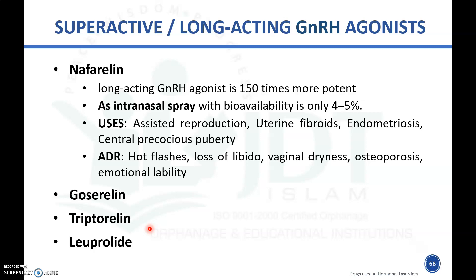Super-active or long-acting gonadotropin releasing hormone agonists include nafarelin, which is 150 times more potent than gonadorelin. It is used as an intranasal spray with a bioavailability of only 4 to 5 percent. It is mainly used for in vitro fertilization, assisted reproduction, uterine fibroids, endometriosis, and central precocious puberty. Adverse reactions include hot flashes, loss of libido, vaginal dryness, osteoporosis, and emotional lability.